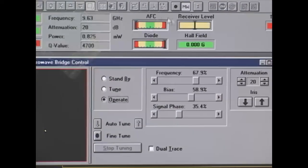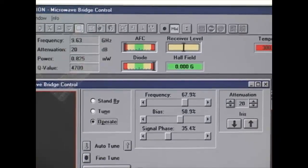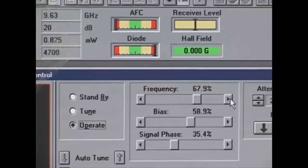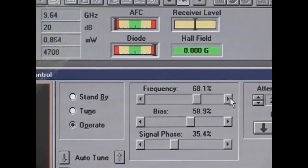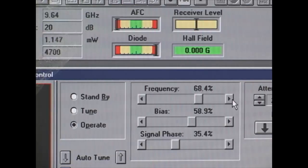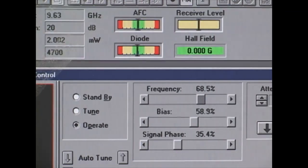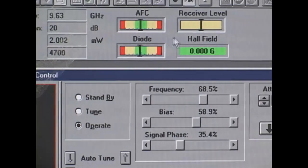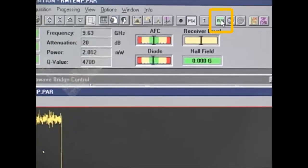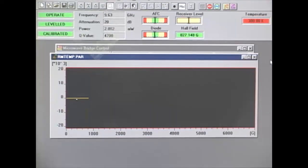The goal is to get the AFC, diode, operate leveled, and calibrated all in green. We do that by moving the frequency, which controls the AFC. Now that we have AFC, diode, and calibrated all in green, we can click run to start recording the signal.